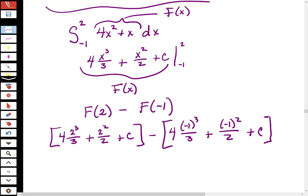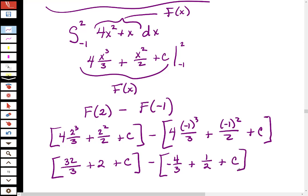And then I'm just going to actually compute this. So let's see, this is 4, 2 cubed, 8, right? So I think this is 32 over 3 plus 2 plus c. Check my math because y'all aren't here with me, but minus, and then this guy, the negative 1 cubed is negative 1, so I just have negative 4 thirds. And then the negative 1 squared is positive 1 half plus c. So I think it looks like this.